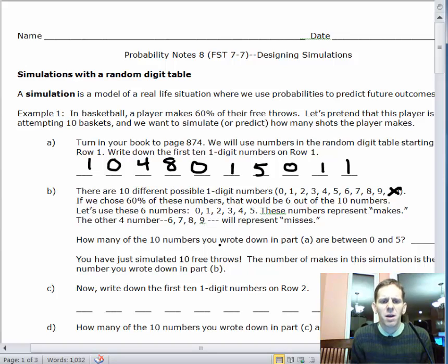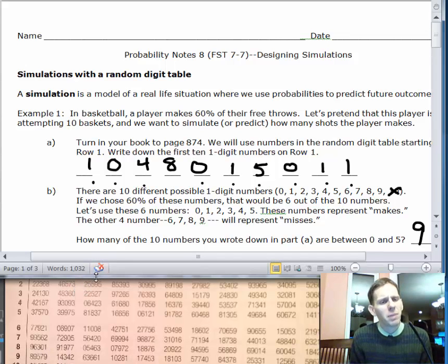So, how many of the 10 numbers you wrote down in part A are between 0 and 5? These are our makes. And when I look at these numbers, it would be 1, 2, 3, no, 4, 5, 6, 7, 8, 9. Nine of our numbers are between 0 and 5. This is a simulation of 10 free throws. The number of makes in this simulation is the number you wrote down in part B, which is 9.